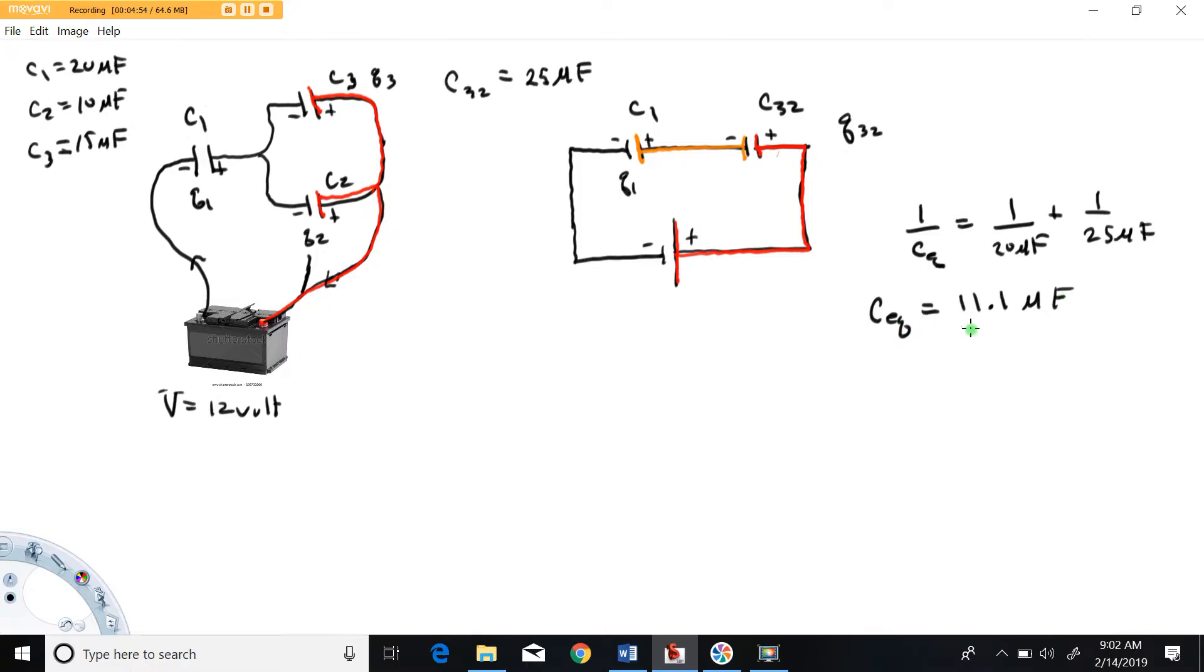All right, so 11.1 microfarads is the equivalent of this series combination. Now we can draw a new circuit. And again, I like to color code all of them. Here's our high potential side of the circuit. Here's our low potential side. This represents the capacitance of that system. So here's the voltage of the battery. We have some sort of charge here. Now this charge would be the charge on the system, on the equivalent capacitance of the entire system. Red to black, the voltage across here is the same as the voltage of the battery, so we can calculate this charge easy enough.